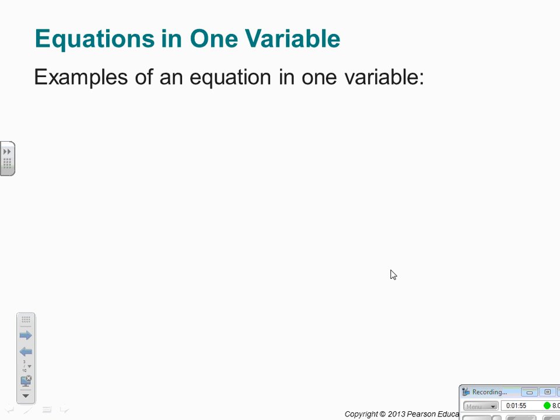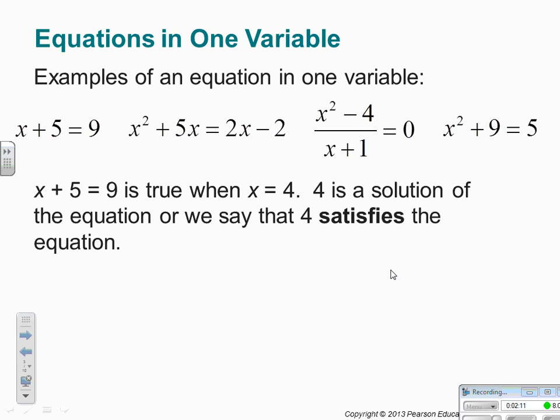So examples of an equation in one variable: x plus 5 equals 9, x squared plus 5x equals 2x minus 2, x squared minus 4 over x plus 1 equals 0, x squared plus 9 equals 5. If you look at x plus 5 equals 9, this statement is true when x equals 4. So 4 is a solution of the equation, or we say that 4 satisfies the equation. It's like when you're hungry after dinner for ice cream, ice cream satisfies you. The equation is hungry for its solution, and only the number that makes it a true statement satisfies the equation.